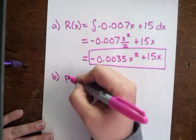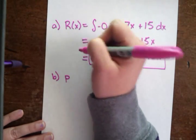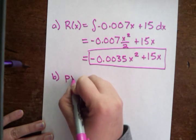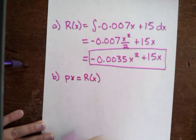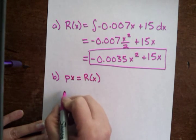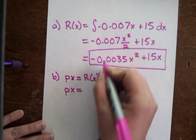If you want to go from p to R(x), you need to multiply p times x. So p times x equals R(x). So in this case, we have p times x equals...